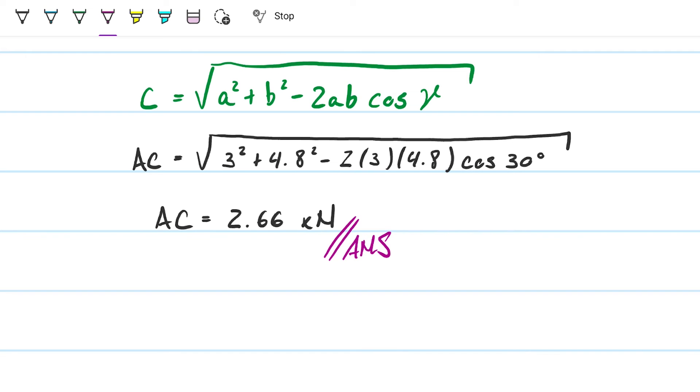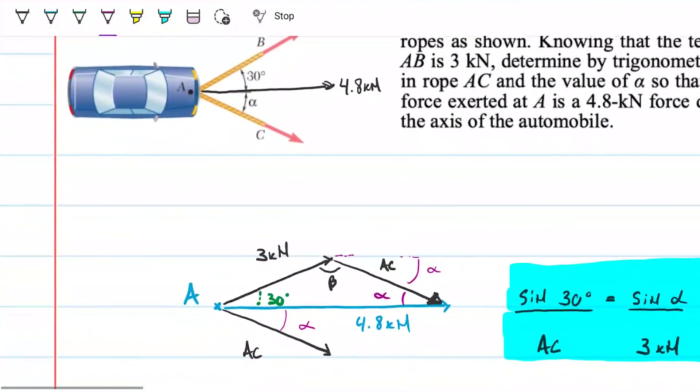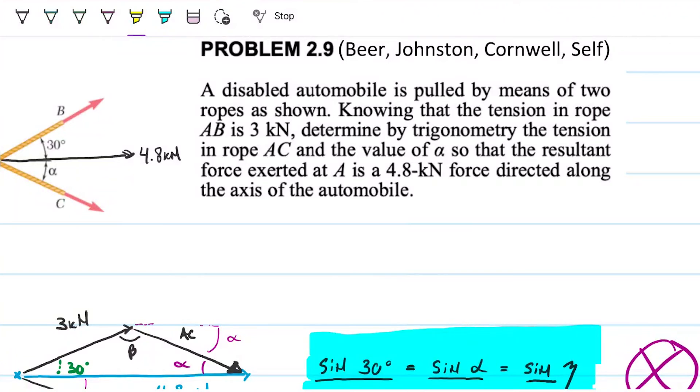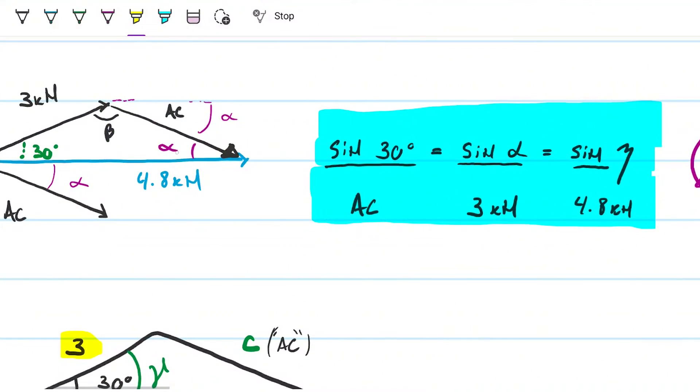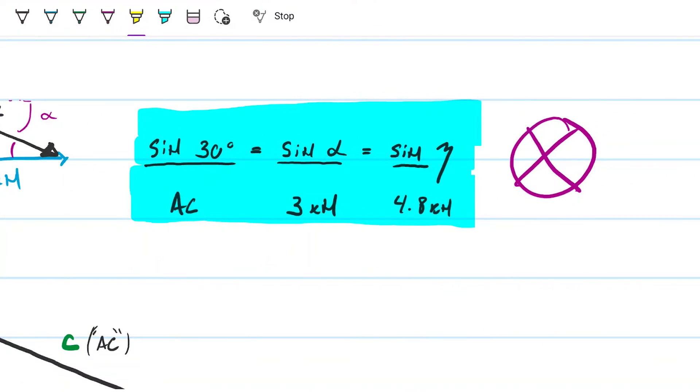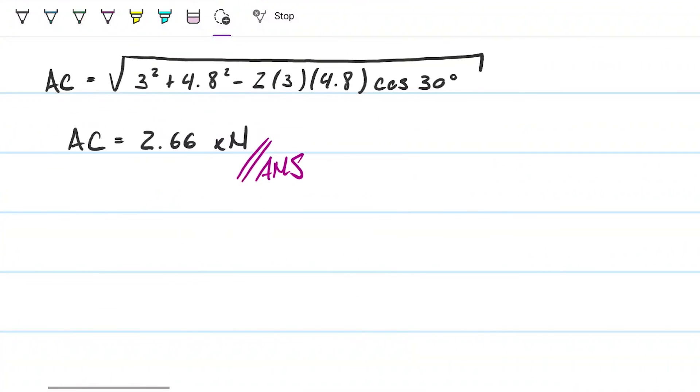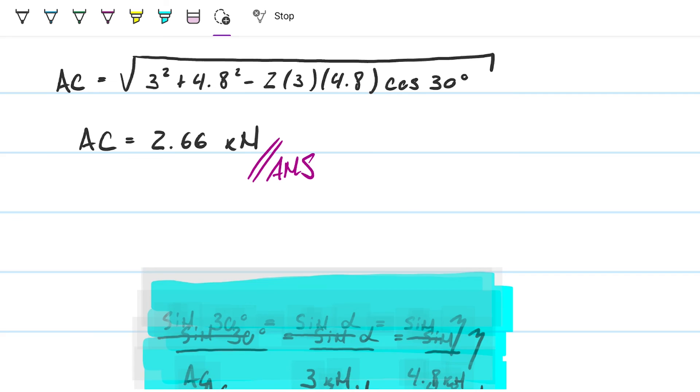The other thing they're asking for is angle alpha, if you recall. So we need to find the tension, 2.66 kilonewtons, and also the value for alpha. And alpha is obviously this guy here, and we couldn't solve it here because we didn't have enough, but now we do. Because now, what I do have is AC is 2.66.